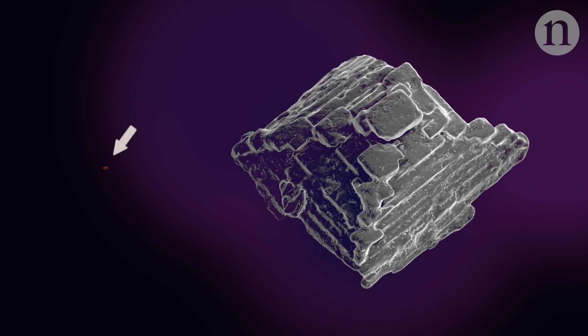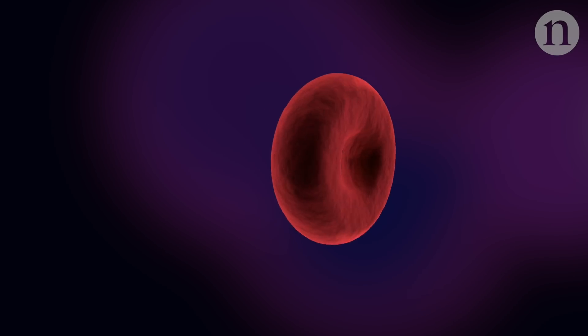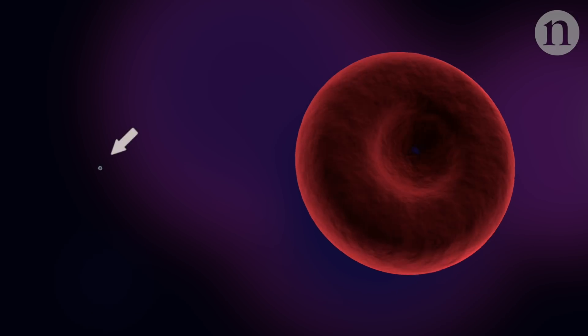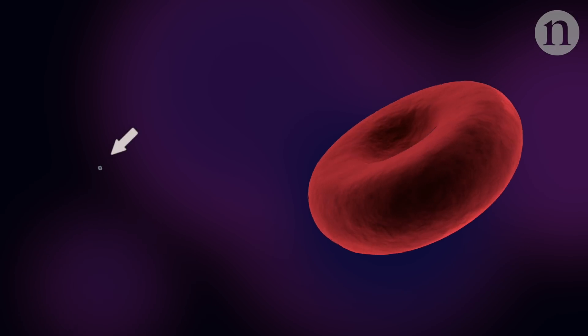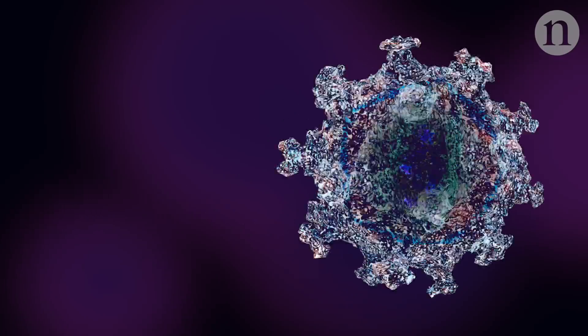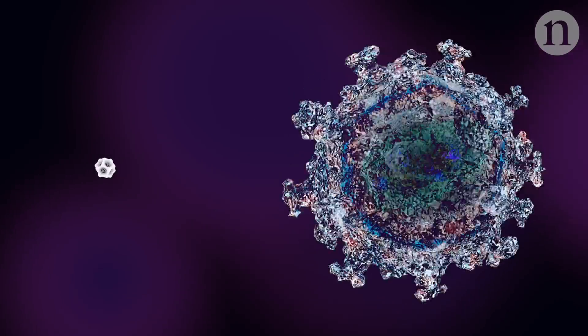That's it there. Now, compare the red blood cell to something much smaller, like this, the HIV virus. The silica nano-cage is a bit more than ten times smaller than that.